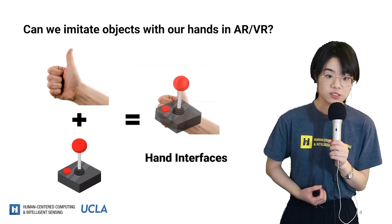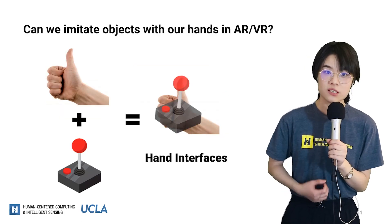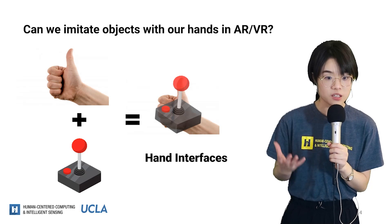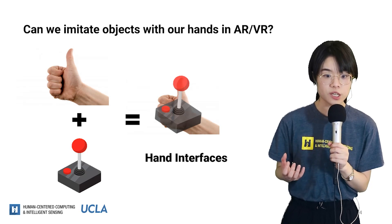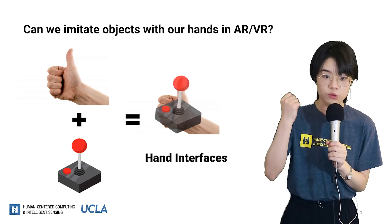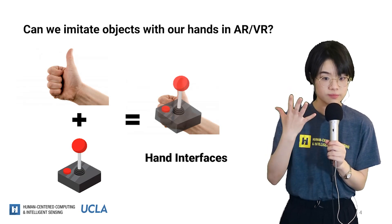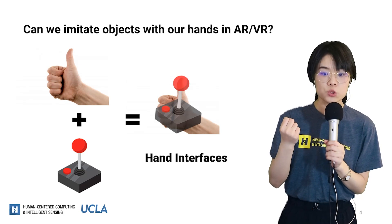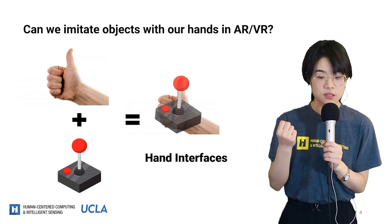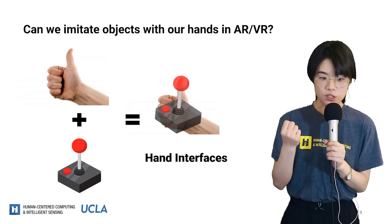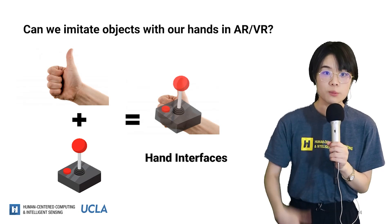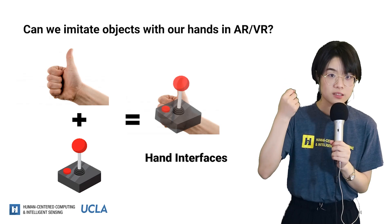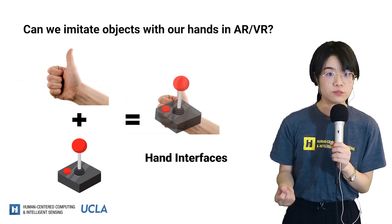Specifically, we propose an interaction technique that allows users to embody objects through imitating them with hands. Our technique supports two common tasks in AR and VR: object retrieval and interactive control.